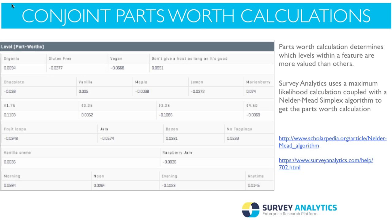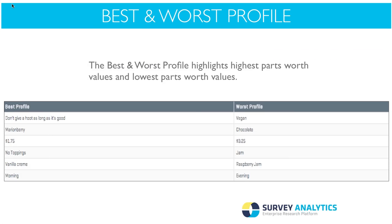With the parts worth, you can see that taking into account every time someone chose an item with a particular level, the higher the value the more it's preferred, and the lower the number the least preferred. Looking at ingredients, we have organic, gluten-free, vegan, and 'don't give a hoot' — and most people when it comes to donuts really don't care, they just like their donuts. Vegan is not popular, followed by gluten-free. We also provide a best and worst profile highlighting the highest and lowest parts worth values automatically. The best profile: don't give a hoot, Merriam Berry for $1.75, no toppings, vanilla cream, bought in the morning. The worst: vegan chocolate for $3.25 with raspberry jam in the evening.